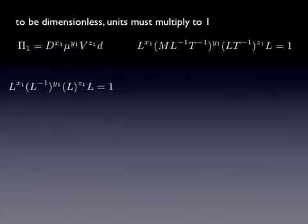To make this easier to solve, I'm going to tease out the L's, the M's, and the T's. Here is the equation for the L's that has to equal 1. M only appears once, and it's M raised to the power of y1, so that one has to equal 1. And then the T's appear twice, and that has to equal 1.